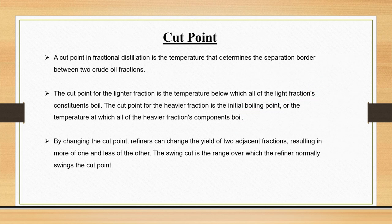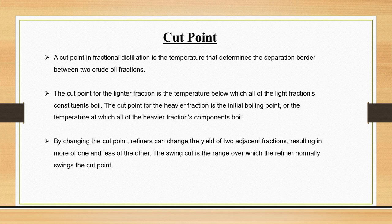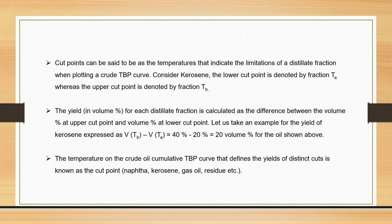Now we will discuss the topic of cut point. A cut point basically indicates the temperature difference between the separation border between two crude oil fractions. It is the temperature below which all of the light fraction constituents will boil, and the heavier fractions would have their initial boiling point at that temperature. By changing the cut point, we can change the yield of two adjacent fractions. The cut point indicates the limitation of a distillate fraction when we plot a TBP curve.